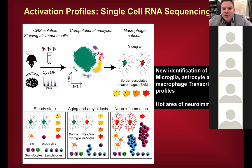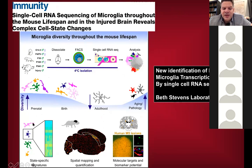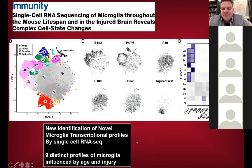These studies show differences in microglia, astrocytes, and T-cells across many profiles — steady state, aging, Alzheimer's disease, and inflammation. This single cell sequencing slide is from Beth Stevens' lab at Harvard. She did cell sorting and single cell sequencing of microglia at prenatal, adult, and aged stages, even in some human lesions, analyzing the different profiles of microglia.